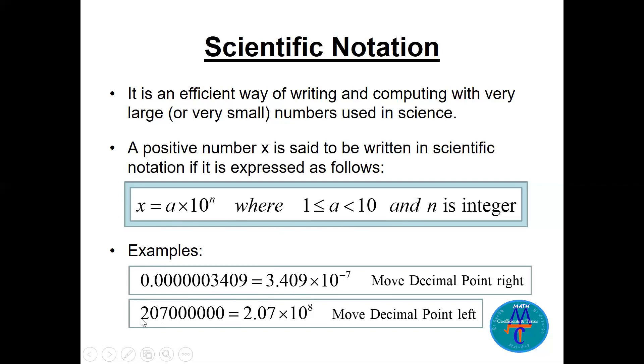Now look at this big number: 2070000000. It's a large number, but where is the decimal point? It's after the last digit.